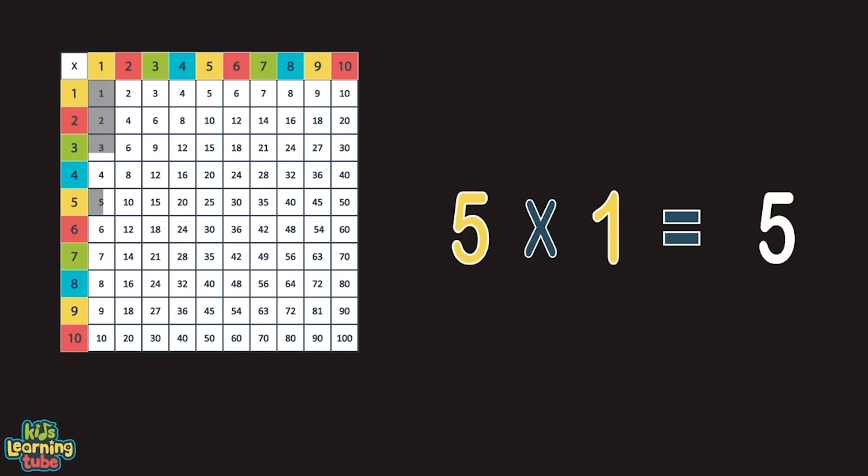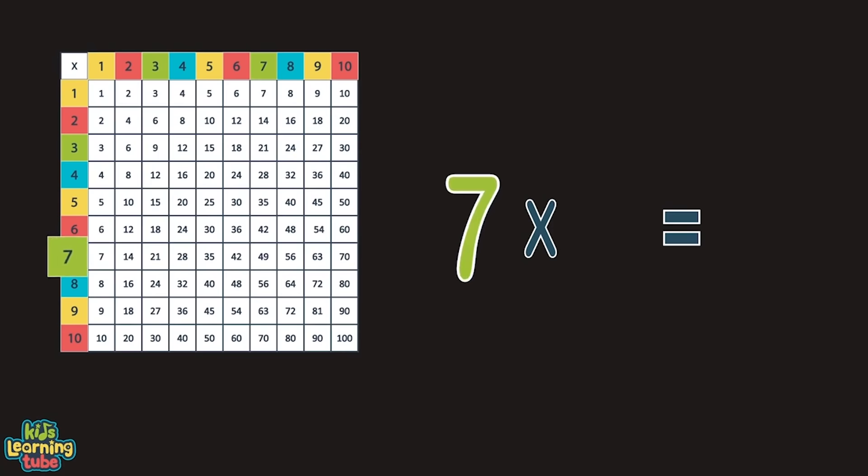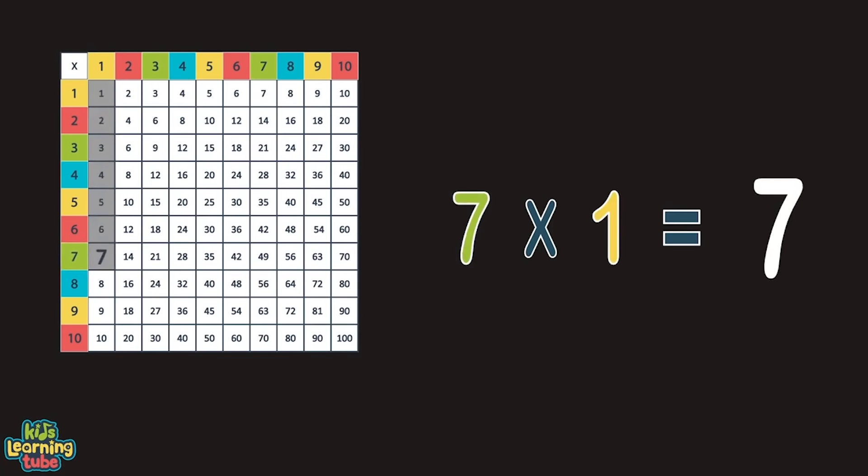When you're counting by six, sing along with me: thirty-six, forty-two, forty-eight, fifty-four, and sixty. When multiplying through ten, that's all you'll see. We're here. Good heavens, let's count by seven: seven, fourteen, twenty-one, twenty-eight, and thirty-five. You're doing great, let's keep this live.